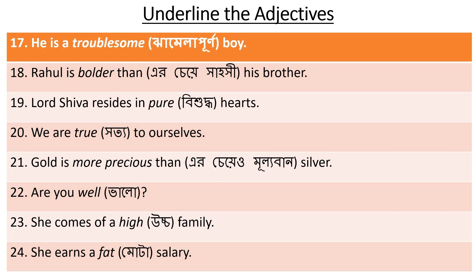Number 17: He is a troublesome boy. Troublesome means someone who causes a lot of trouble - 'troublesome' is the adjective. Number 18: Rahul is bolder than his brother. 'Bolder than' - this is used in the comparative degree.